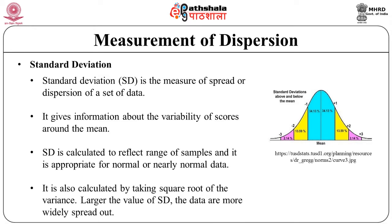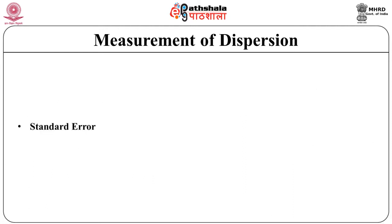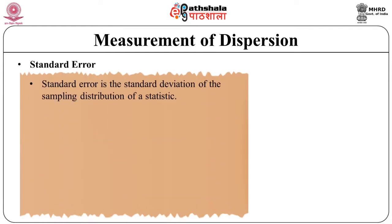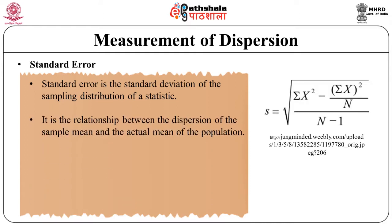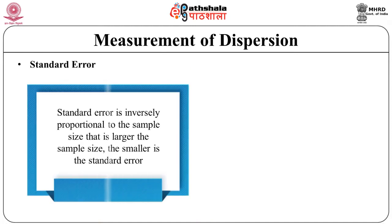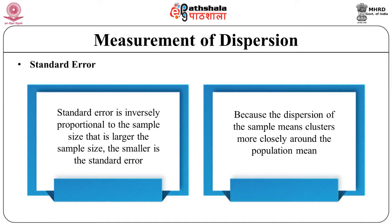Standard deviation is also calculated by taking the square root of the variance. The larger the value of standard deviation, the more widely spread the data are. Standard error is the standard deviation of the sampling distribution of a statistic — it is the relationship between the dispersion of the sample mean and the actual mean of the population. It is estimated from the standard deviation and indicates the certainty of the mean. The standard error is inversely proportional to the sample size: the larger the sample size, the smaller the standard error, because the dispersion of sample means clusters more closely around the population mean.